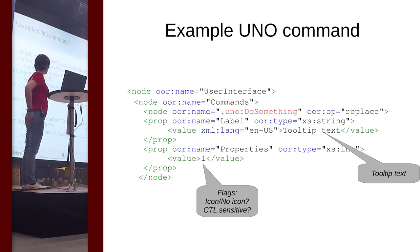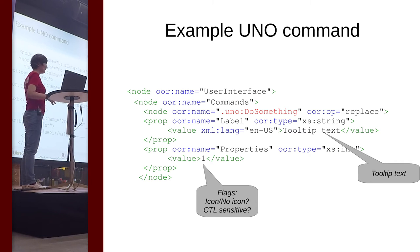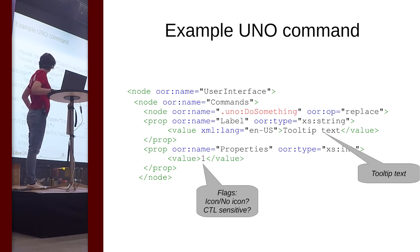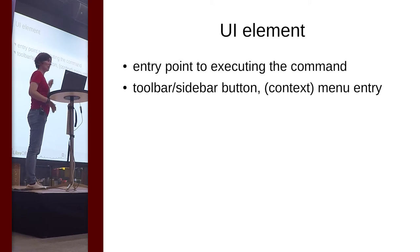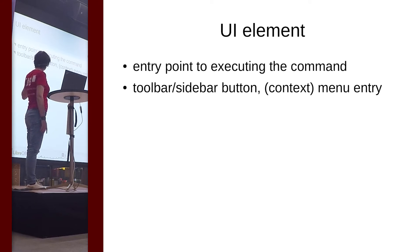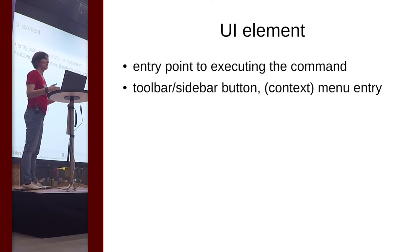This flag will be important if you write RTL or vertical text, because you can define that your icon is supposed to be mirrored or rotated vertically. Once we have a command, we need an entry point — something the user can press Enter on or click with the mouse. It can be a toolbar button, a sidebar button, a menu entry, or a context menu entry, but I'm not going to talk about context menus because it's discouraged to add new context menus.